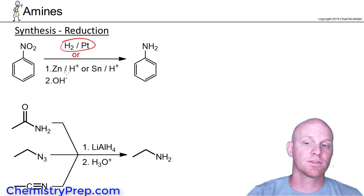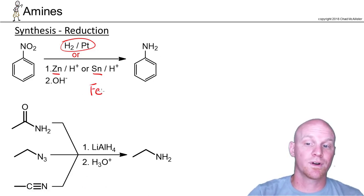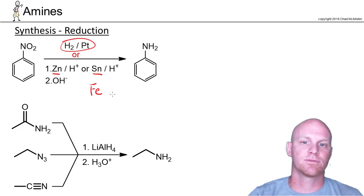If you want to do a selective reduction, you can use zinc or tin under acidic conditions followed by a little base to neutralize it back to an amine. Iron would work as well instead of tin or zinc, providing options for selective reduction of your nitro group to an amine.